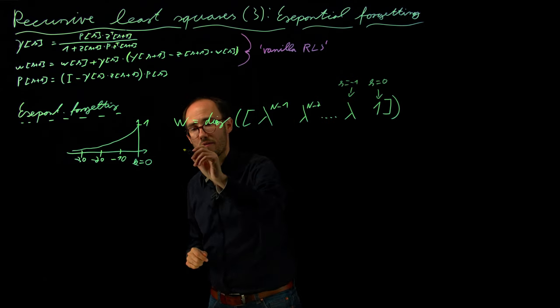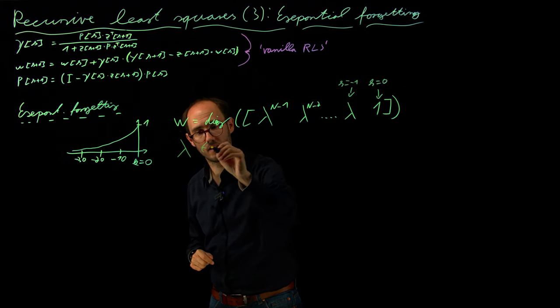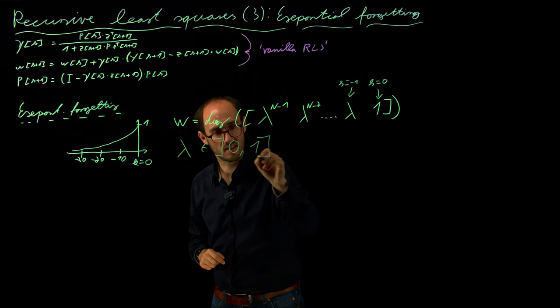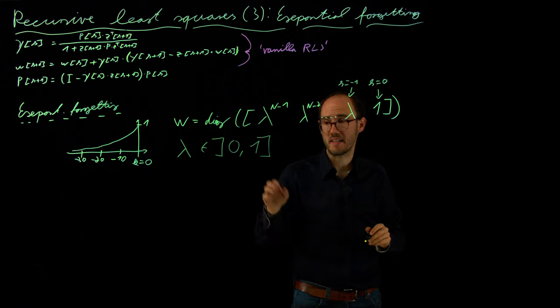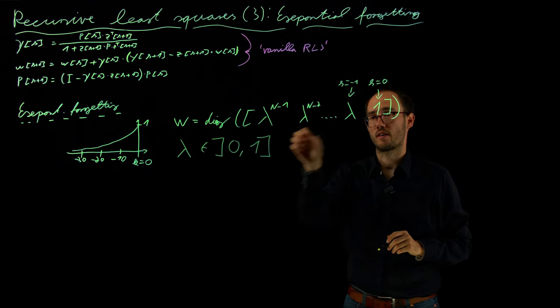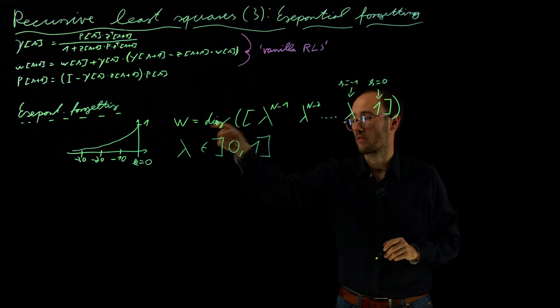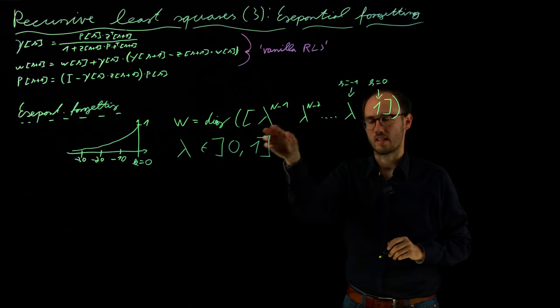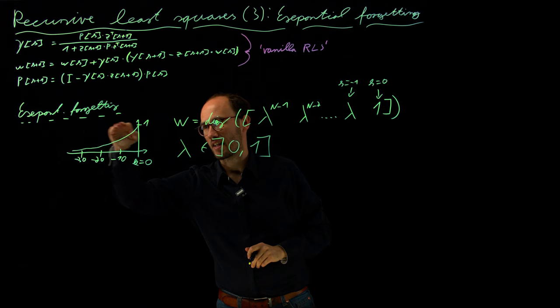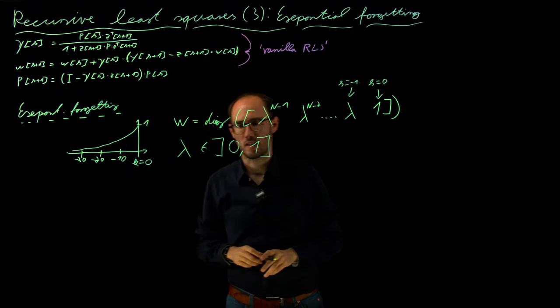And this forgetting factor lambda is in the range of 0 and 1, basically indicating that if lambda is very close to 1, then all this entire power series in this diagonal matrix for the weighting term here would be basically just an identity matrix, meaning that this would be more or less like a flat line, so we would not have any exponential weighting at all.